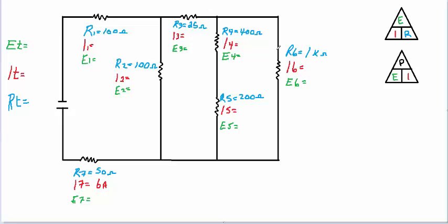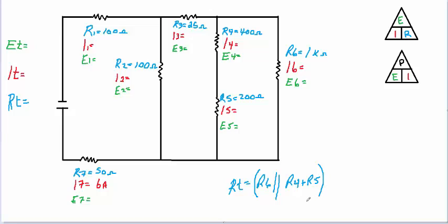Starting from the right-hand side, we've got resistor 1 over here, and we've got resistor 4 and resistor 5 that are in parallel with resistor 6. So if we write our resistance equation starting from the right-hand side, resistor 6 is in parallel with the sum of resistor 4 and resistor 5. We have to do that first — add resistor 4 and resistor 5, then put it in parallel with resistor 6. We'll put brackets around that to denote we're doing it first.